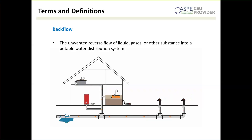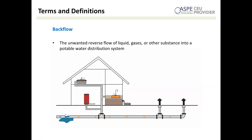Backflow is the unwanted reverse flow of a liquid, gas, or other substance into a potable water distribution system. Our potable water distribution system is built to operate primarily in one direction — from the source to the point of use out of your taps. When that direction reverses and you have cross-connections downstream, you risk introducing contaminants. In the case of a water main break, there's potential to siphon dirty water from bathtubs, glycol from boiler systems, or fertilizer from irrigation systems into the water meant for drinking.